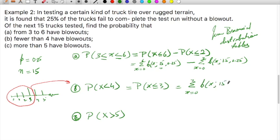The third part is for more than 5. So it will be 1 minus—since 5 will be included here, total minus up to 5 will be more than 5.